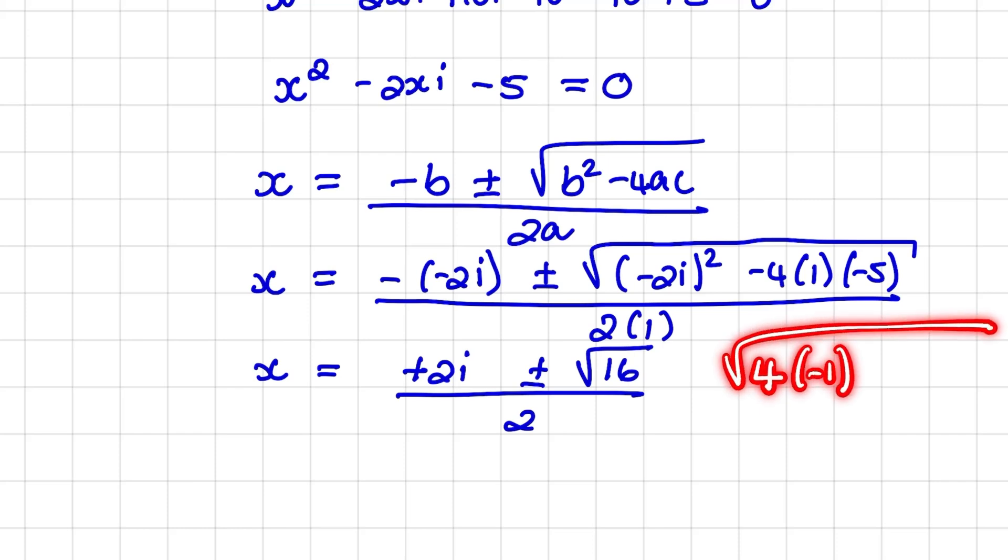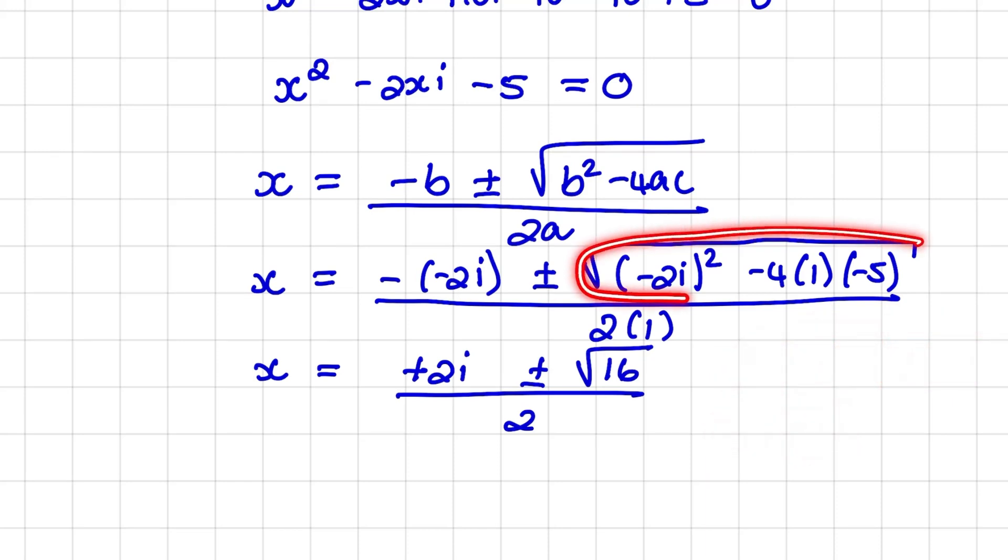So negative 2 squared would be plus 4 and i squared would be negative 1. So we have the square root of 4 times negative 1 minus 4 times 1 times negative 5. So that becomes plus 20. And when I simplify, I have the square root of 16. So that is what happens in our discriminant. And we know that the square root of 16 is equal to 4.